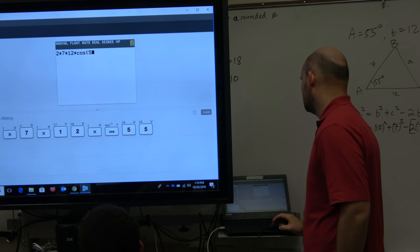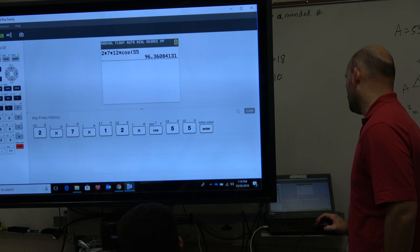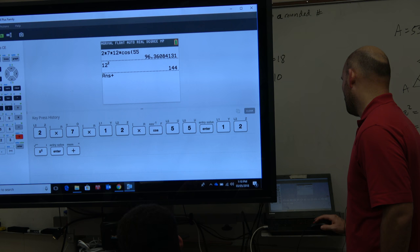All right? So now, then I'm going to do 12 squared, which is 144, plus 7 squared, which is 49. And then I'm going to subtract. Oh, crap. Oh, why did I do that? Oops.